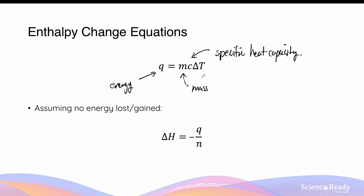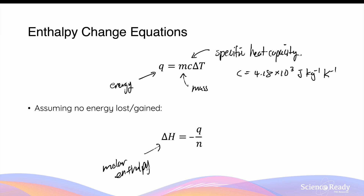In an experiment where we are measuring the change in temperature of water as a way to calculate the energy absorbed or released, then m is the mass of water, C is the specific heat capacity of water, and this is given as 4.18 x 10 to the power 3 joules per kilogram water per kelvin of temperature change. Assuming there is no experimental losses or gains of energy, the Q calculated from the first equation can be used in the second equation to calculate the molar enthalpy change of combustion by simply dividing by the number of moles of a particular substance that was used in combustion. There is a negative in the equation to account for the transfer of energy.